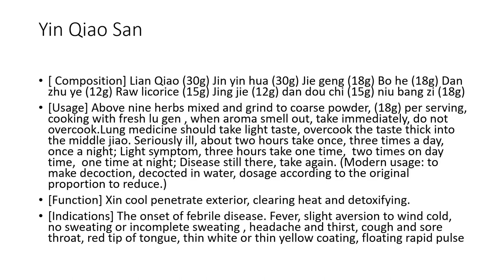Ingredients. With 9 herbs, grind to coarse powder. Each time, using 18g, cooking with fresh Lu Gen. When the herbs' aroma comes out, take immediately — do not overcook. Function: Pungent Cool Herb Relieve Exterior, Clearing Heat and Detoxification. Indication.